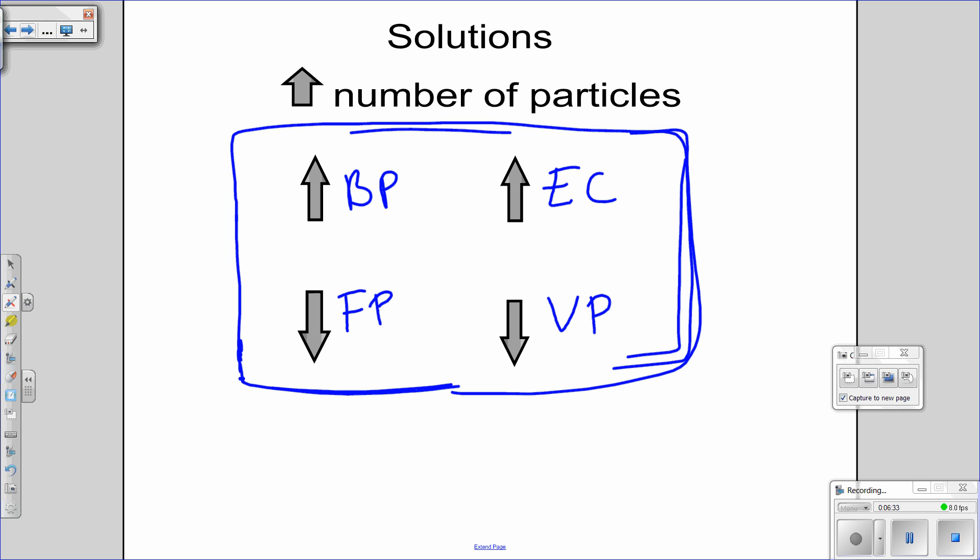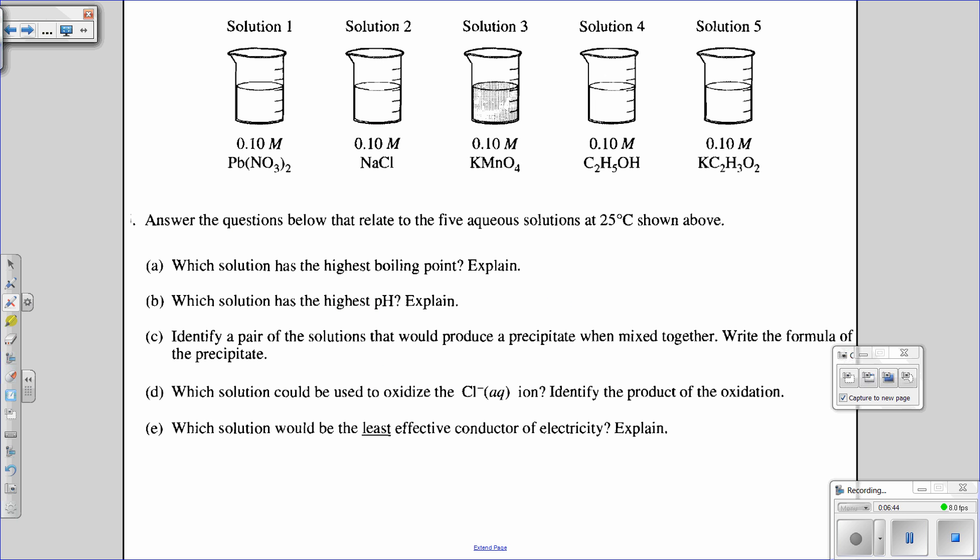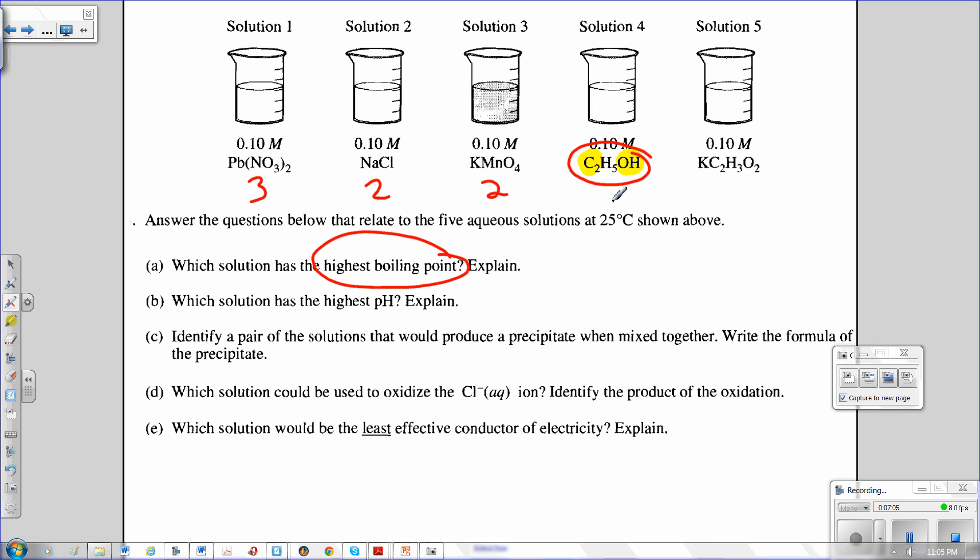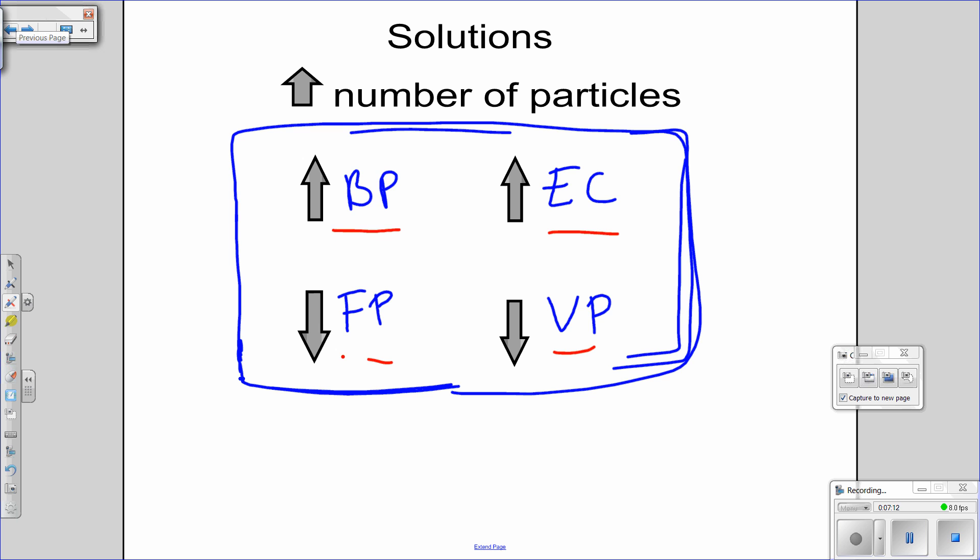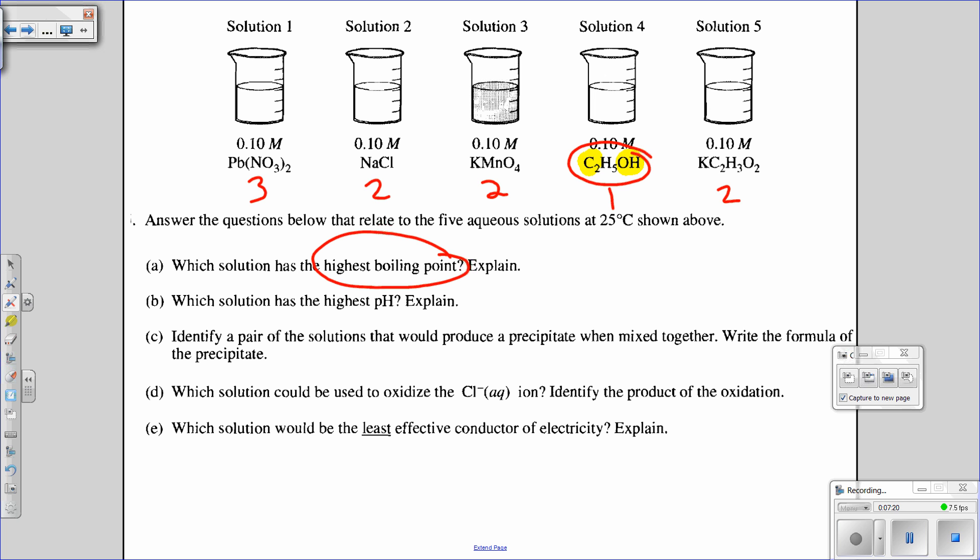A couple things I want to talk about. The solutions one, number of particles. Remember, the greater the number of particles, the higher the boiling point, the higher the electrical conductivity, lower the freezing point, the lower the vapor pressure. What does that look like on the AP exam? First question they ask is, which one has the highest boiling point? First thing I'm going to do is go through and do the Van't Hoff factor. This breaks up into three ions. This breaks up into two. This breaks up into two. This is an alcohol. Remember, if it has carbon in the front, OH on the end, it's an alcohol. So the Van't Hoff factor, this is a non-electrolyte, is one. This breaks up into two. So the first thing they ask me is highest boiling point. Well, remember, highest boiling point is greatest number of particles. So when I come back over here, the greatest number of particles is going to be Pb(NO3)2. So solution number one is going to be the correct answer for that.